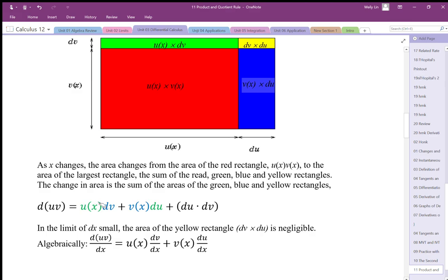This u times dv, v times du, which is our product rule. Now, we can finish this up algebraically. You can notice there's a dx missing. We just divide all this by dx, and we come up with the product rule.